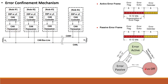In the Bus-Off state, the node disconnects from the network and no frames are transmitted. In the Error Active state, the node can send data frames, remote frames, overload frames, and active error frames. In the Error Passive state, it can send data frames, passive error frames, remote frames, and overload frames. If a node has more errors it sends a passive error frame; if fewer errors it sends an active error frame.